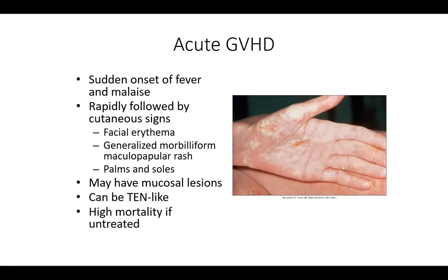Acute GVHD presents with sudden onset of fever and malaise, rapidly followed by facial erythema and a generalized morbiliform rash of macules and papules. Palms and soles are typically involved; there can be mucosal lesions, and it can resemble toxic epidermal necrolysis with high mortality if untreated. It can look exactly like a morbiliform drug eruption on histopathology, so clinical correlation is essential, and empirical treatment is preferred when there is both clinical and histologic evidence.